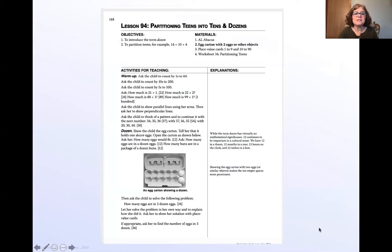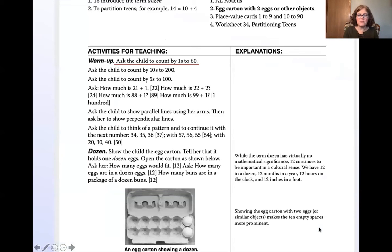So here's that same lesson. I'm going to zoom it up so you can read this. The warm-up section, it says, ask the child to count by ones to 60. So you turn around and say, hey, McKenna, or your child's name, McKenna, count by ones to 60. And off she goes. The next question, ask your child to count by tens to 200. McKenna, count by tens to 200. See how easy that is?